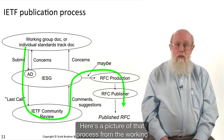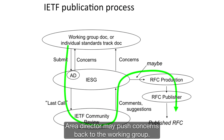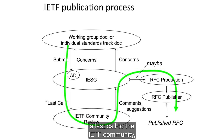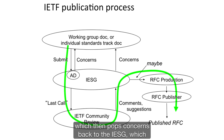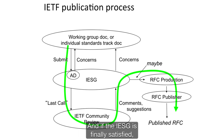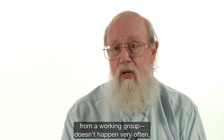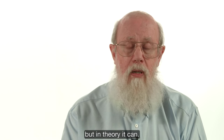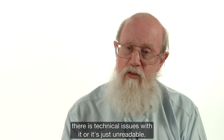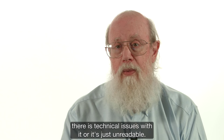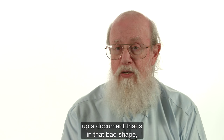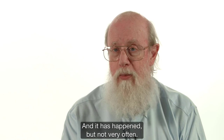Here's a picture of that process: from the working group to an area director, the area director may push concerns back to the working group, then the IESG evaluates it and sends the last call to the IETF community, which pops concerns back to the IESG, which may send concerns back to the working group. If the IESG is finally satisfied, it sends a request to publish as an RFC. In theory, the IESG can reject a document from a working group — it doesn't happen very often, but it can say the document is too broken, has technical issues, or is unreadable.